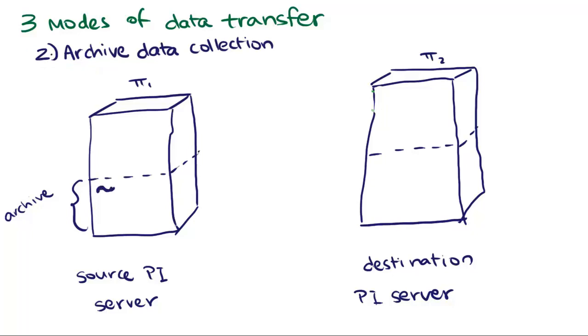The second mode of data transfer is archive data collection. In this mode, the interface will query the source PI server archive for its data.